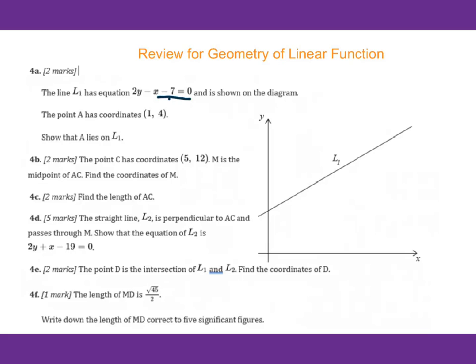The point A has coordinates (1, 4). Show that A lies on L1. How to decide a point is on a line, you need to plug in. So we do 2 times 4 minus 1 minus 7 equals 0, because this is x and here's y.